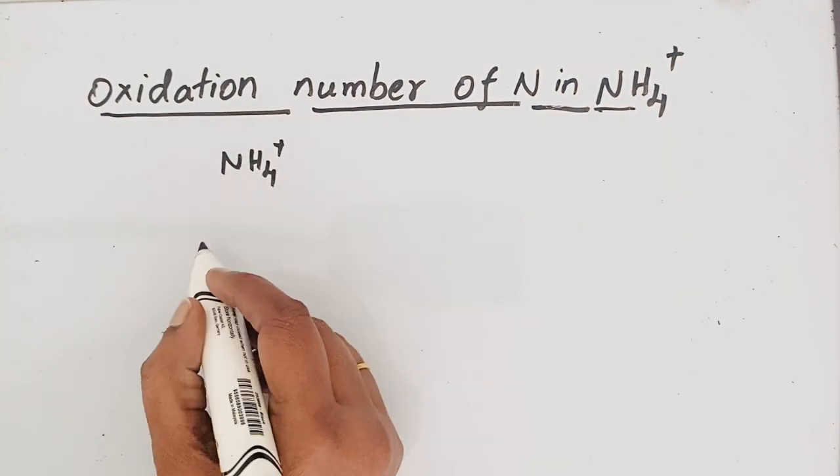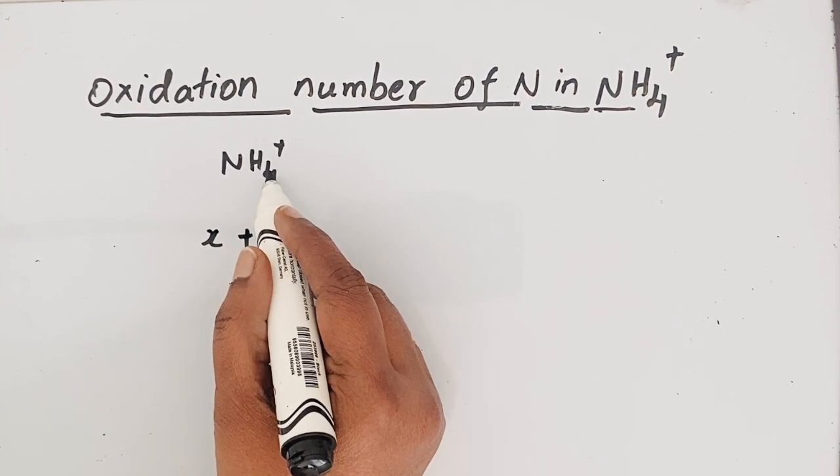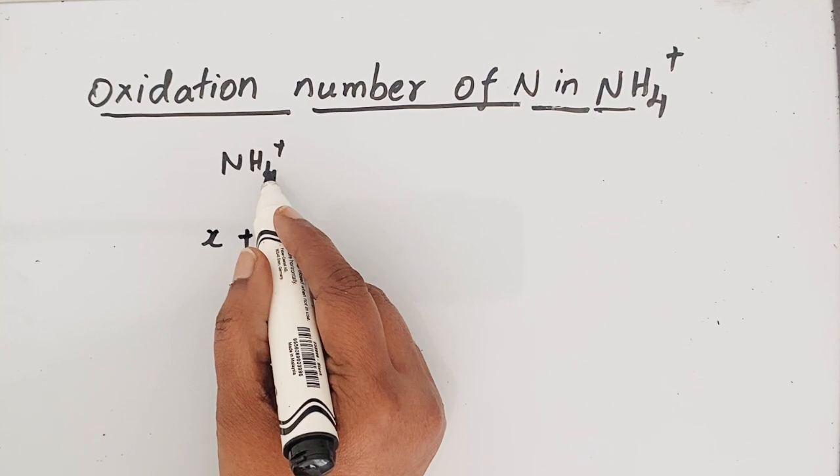So for nitrogen, let us keep that as x, and we have 4 hydrogen atoms. The charge carried by each hydrogen atom is +1.